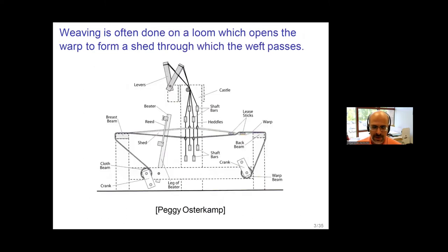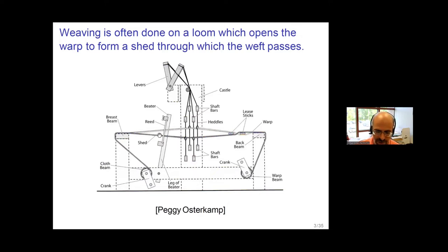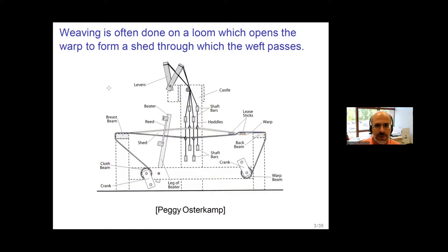I want to start with the mechanism of how a loom works. The very basic idea is you have warp threads going this way. Some of the warp threads are selected to be lifted away from the others — that forms an opening known as a shed. Then you pass the weft threads back and forth through the shed. You change the shed, meaning some threads that were up go down and vice versa, and that interlocks the threads together so you actually get cloth.